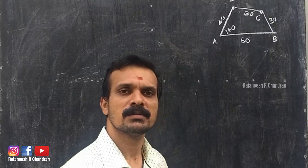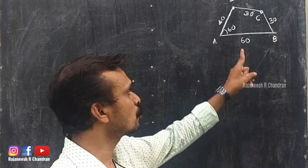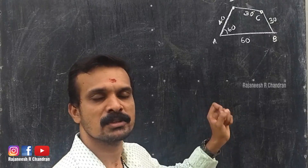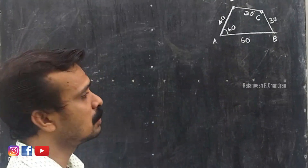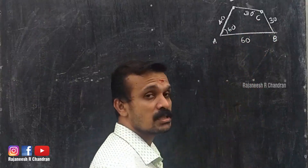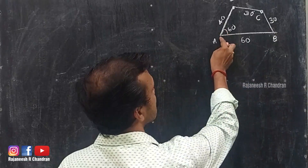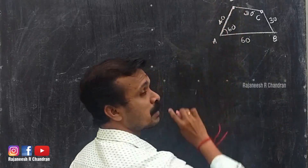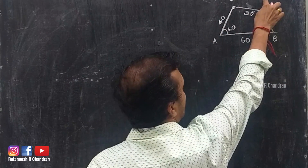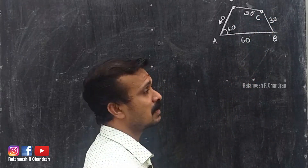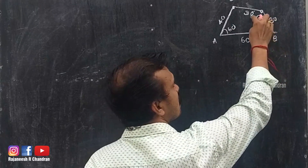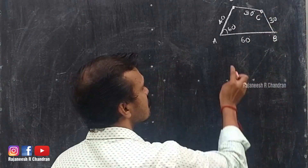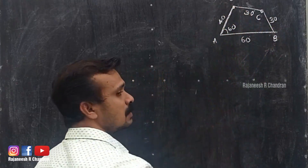The first step is to draw the orthographic projection of this object. Draw a horizontal line; at an inclination of 60 degrees, draw 40 mm so that we have obtained point D. Keeping A as center, draw a radius of 30; keeping B as center, intersect an arc of 30, so that we have obtained the intersection point C. So A, B, C, and D.